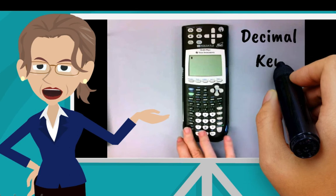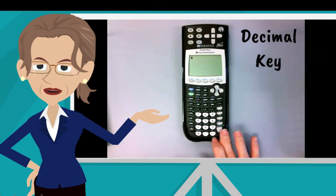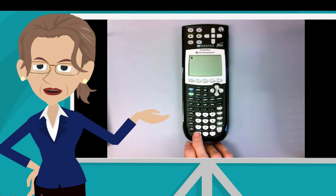The decimal key is on the bottom row of the numpad, just to the right of the zero. Press it, and you'll hear decimal point symbol.